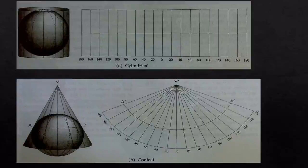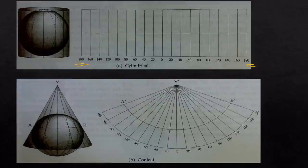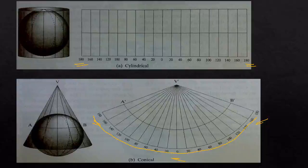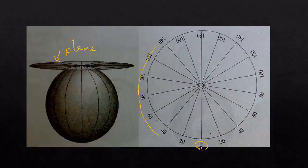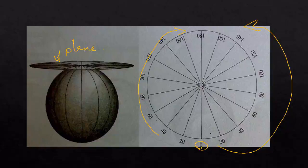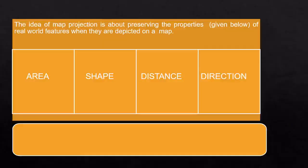The cylindrical scale runs from 180 to 180. For the conical scale, it goes from 0 to 180 to the left and 0 to 180 to the right, and that is how the earth is projected on a conical surface. For the planar surface, similarly, from 0 to 180 and from 0 to 180 — that is how the earth is projected on a planar surface.